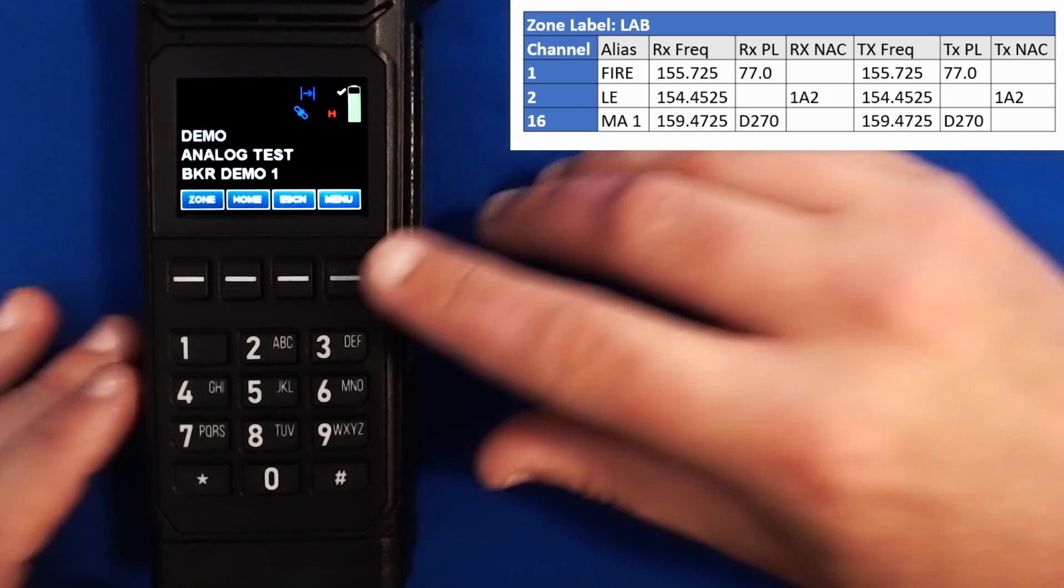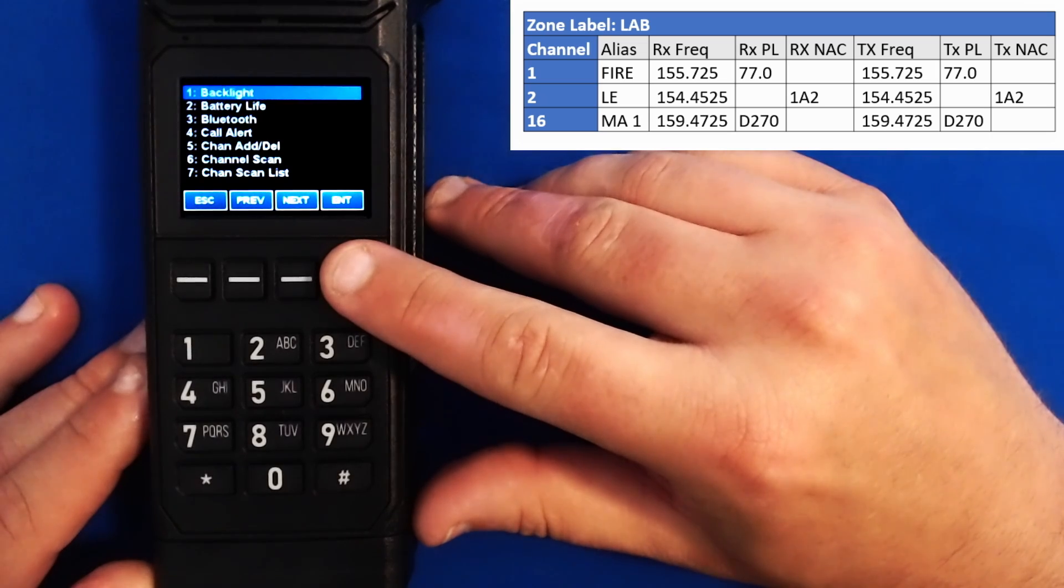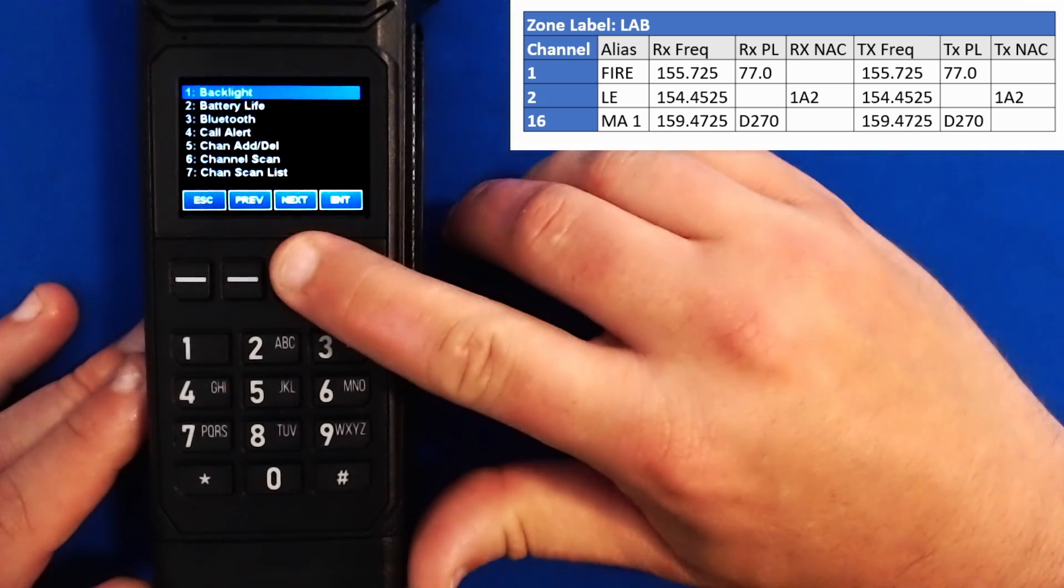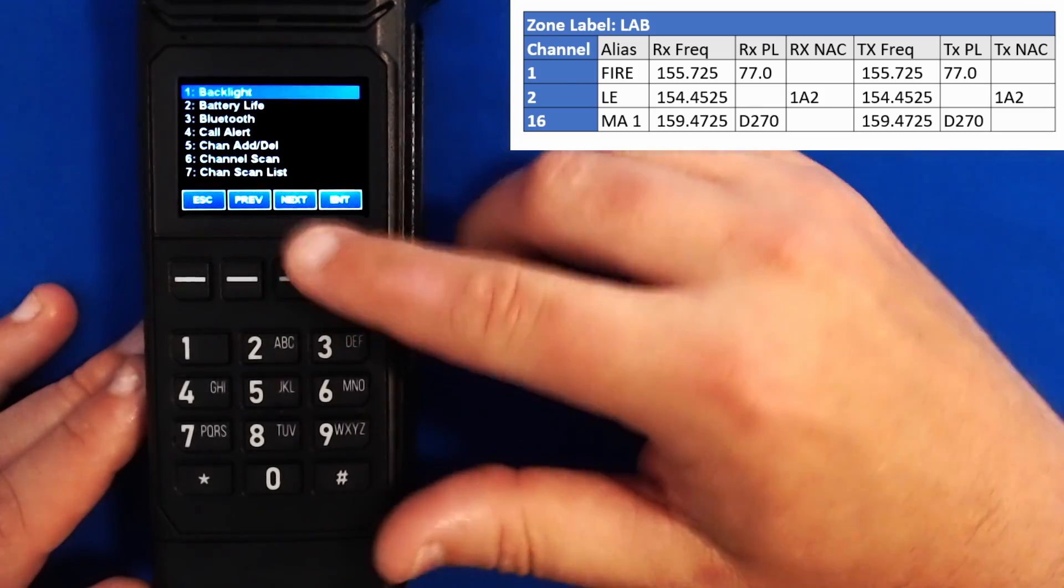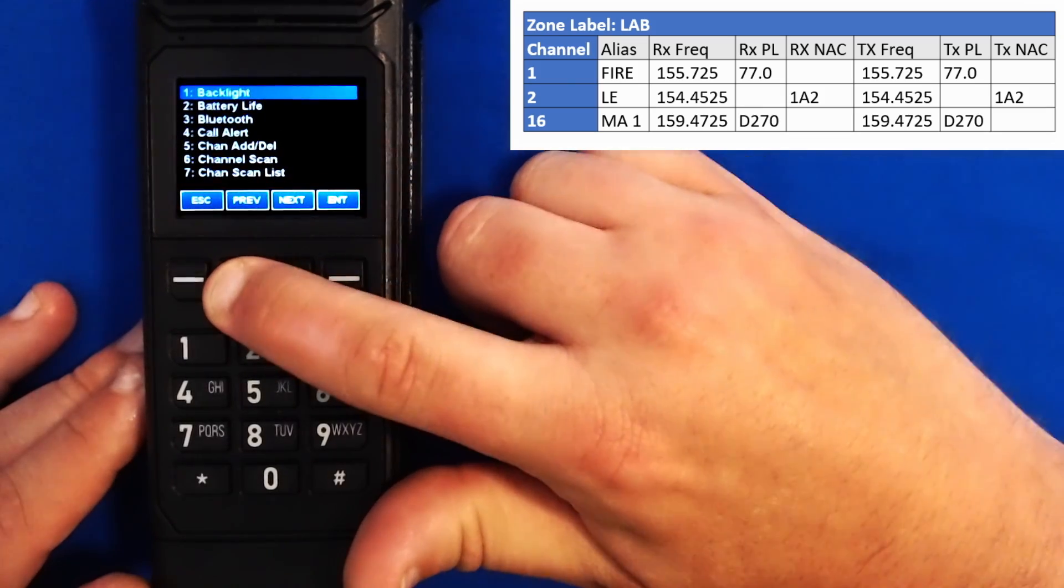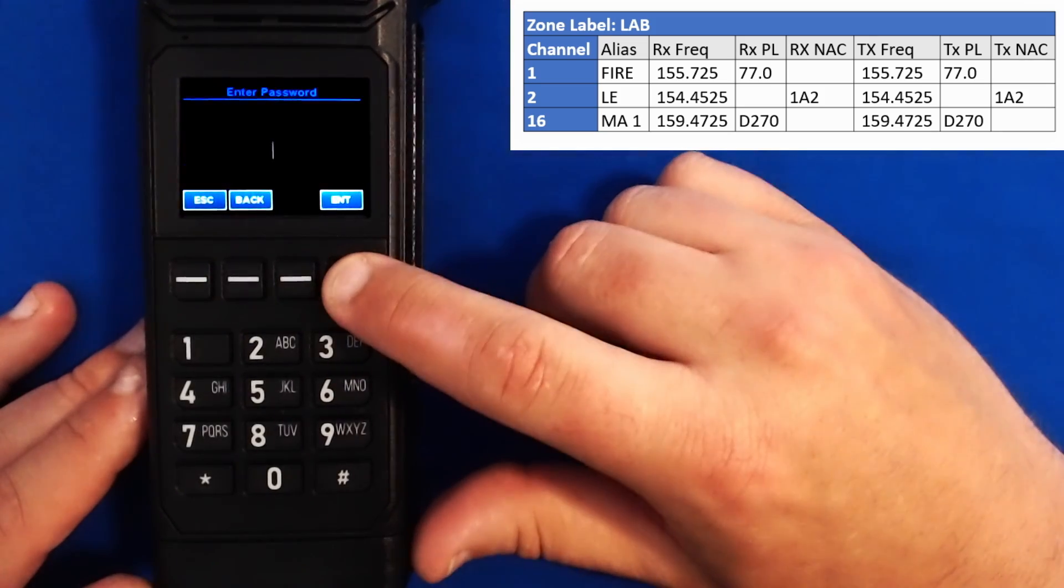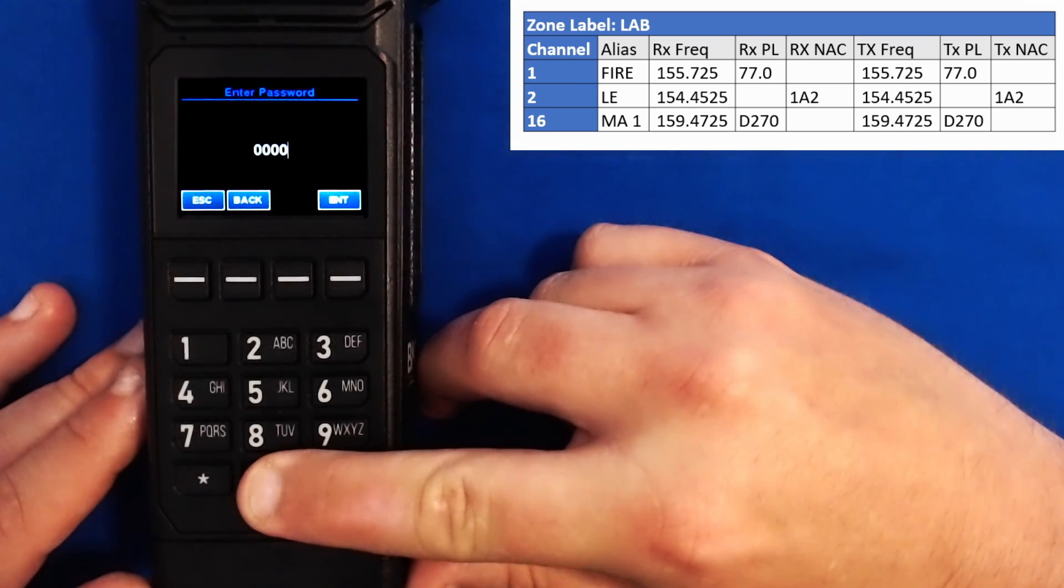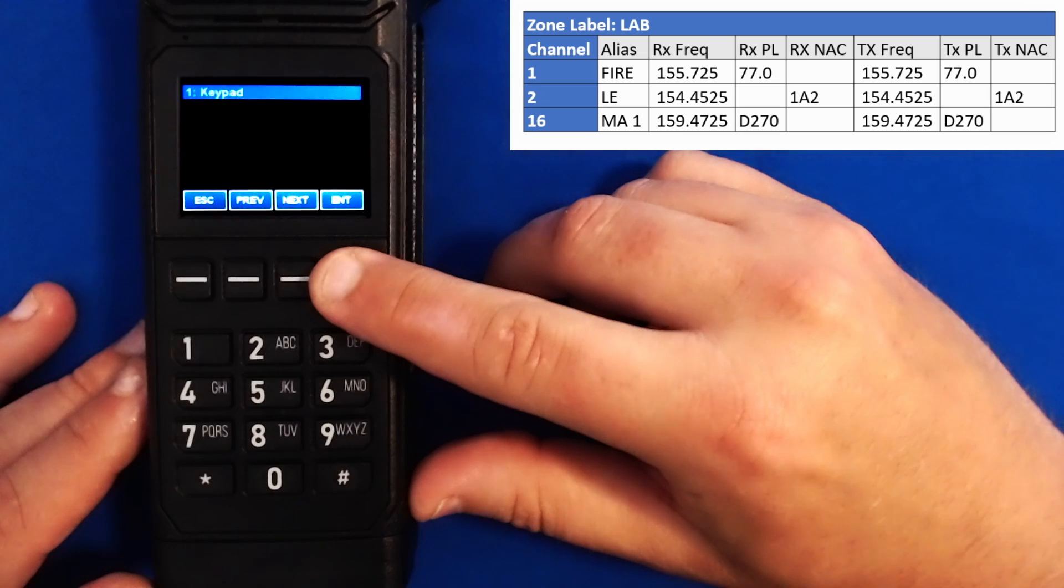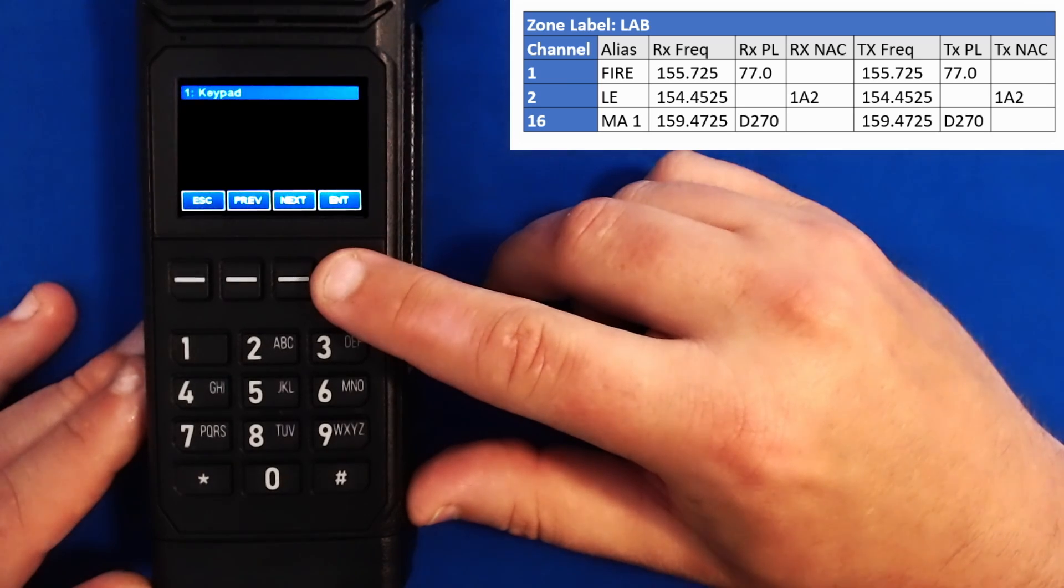To begin, let's press the menu button and access the keypad programming menu. To access the keypad programming menu you can either hit next and cycle through the menu, or it's always at the end of the menu. So if you're beginning at one like I am, you can hit previous and it will cycle around to keypad programming. We're now going to press enter and enter the default password of six zeros and press enter.